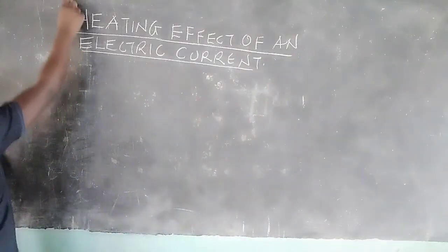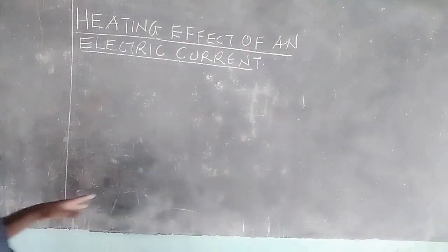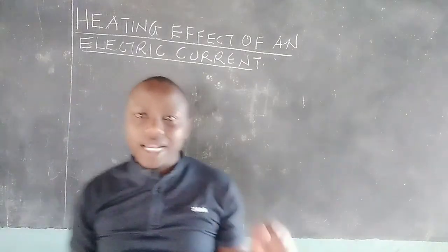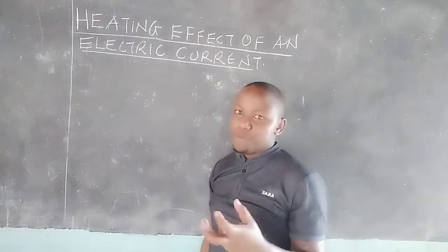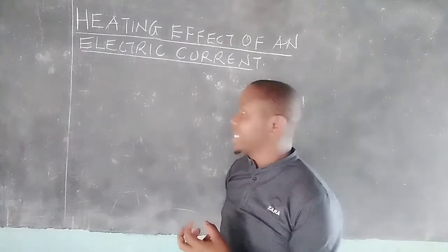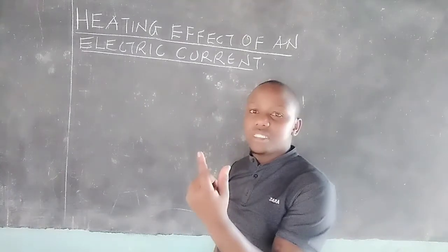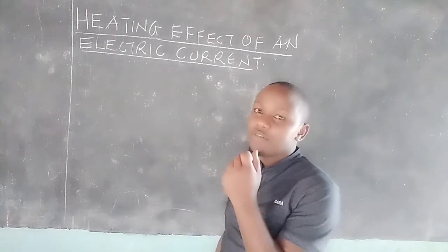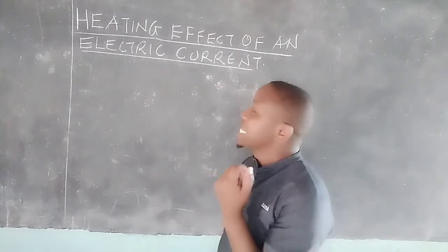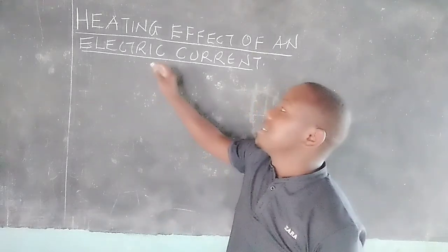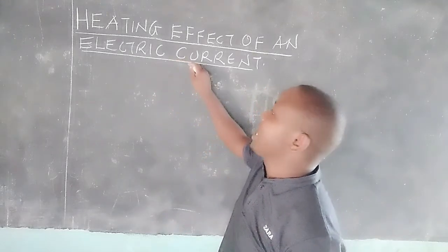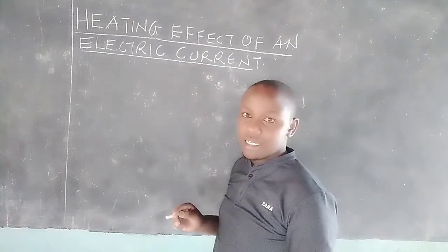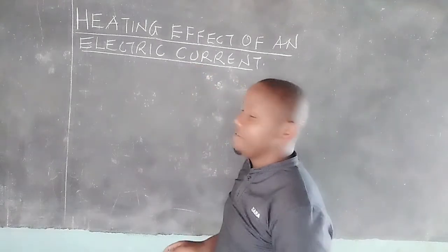It is very evident that when a conductor carrying current is held, you will experience some warmth in this conductor. Even when you hold a bulb, you find that some of them produce a lot of heat. That is evidence that a current passing through a conductor causes a heating effect.